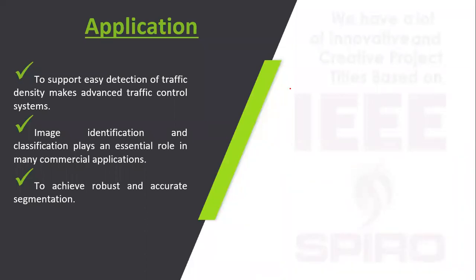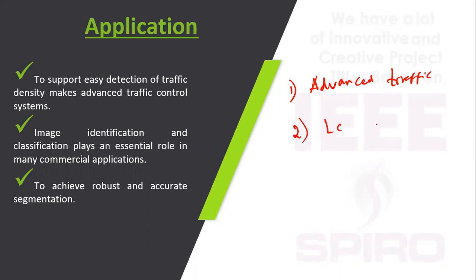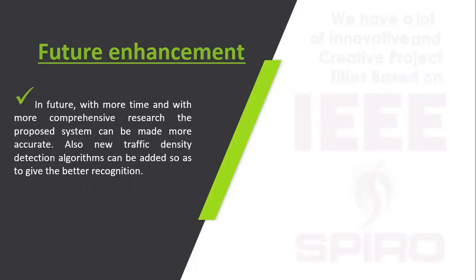This system is used in many advanced traffic control systems. Here we are adding an LCD display for the indication of traffic density, which is one more advanced feature. Currently we process with dataset images, but in future we will process with real-time images for the detection of traffic density.